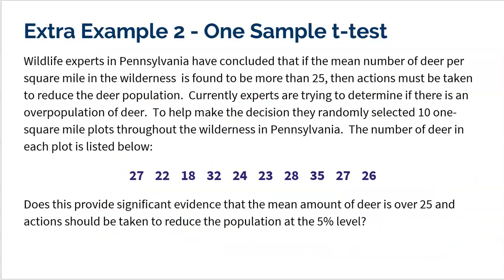Let's look at the second example, also a one-sample T-test. Wildlife experts in Pennsylvania have concluded that if the mean number of deer per square mile in the wilderness is more than 25, actions must be taken to reduce the deer population. Experts are trying to determine if there is an overpopulation of deer. To help, they randomly selected 10 one-square-mile plots throughout Pennsylvania. Does the data provide significant evidence that the mean number of deer is over 25 and action should be taken, at the 5% level?